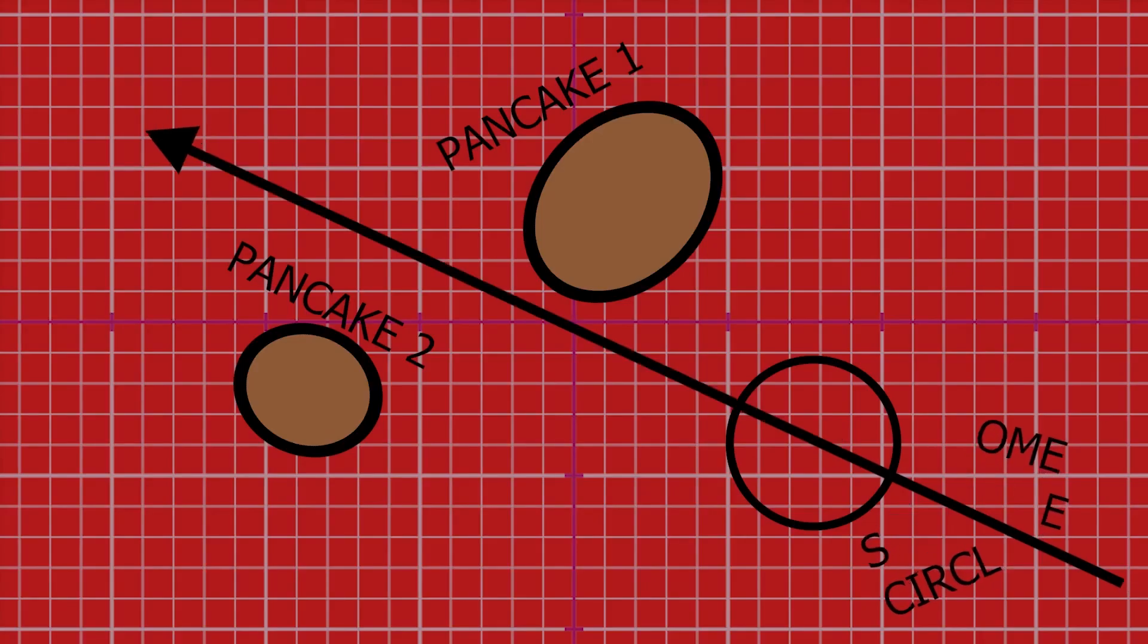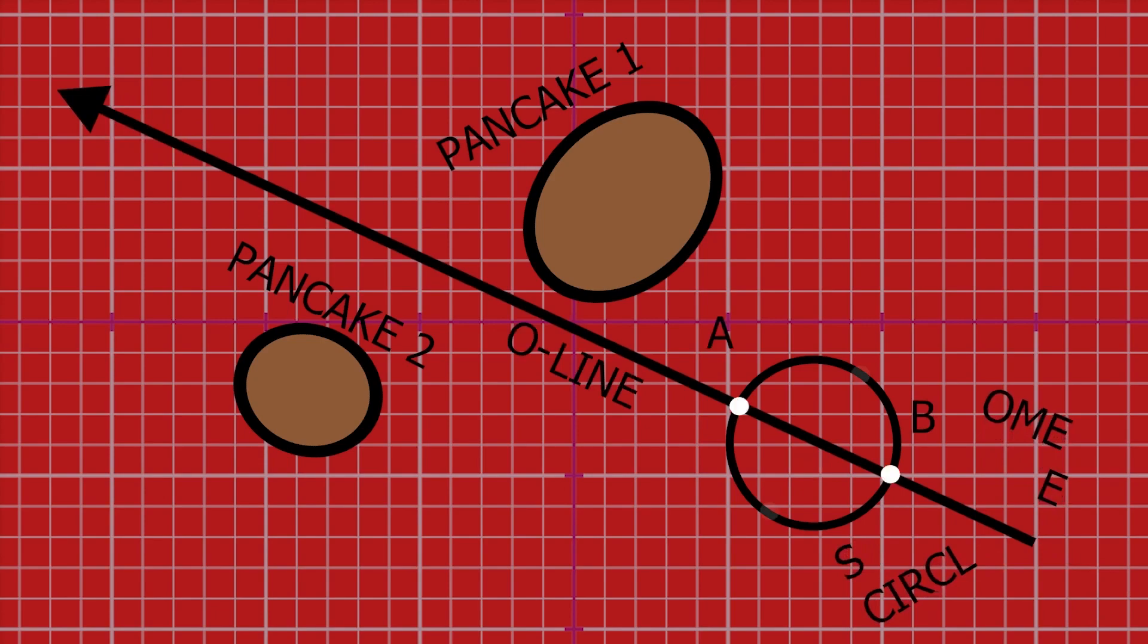Now onto pancakes. Imagine that Pancake 1 and 2 got squished onto the X-Y plane. Now imagine a circle on the plane. Spearhead the circle through its center with an O-line, and set B and A to be the first and second times the O-line hits the circle, respectively.